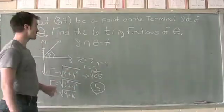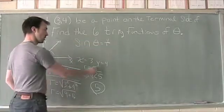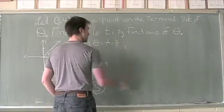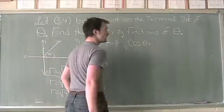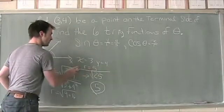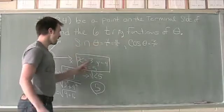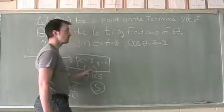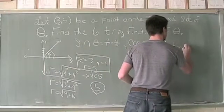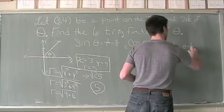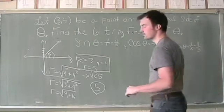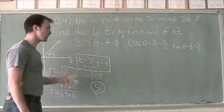We can now find our six trig functions. Sine of theta is y divided by r, which gives us 4 over 5. Cosine of theta is x divided by r, which is 3 over 5. Tangent of theta is y divided by x, which is 4 over 3. That takes care of sine, cosine, and tangent.